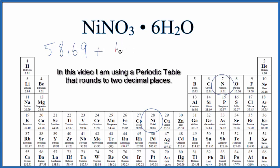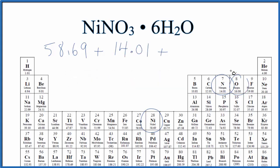Nitrogen, 14.01 grams per mole, and then the oxygen, that's 16.00 grams per mole. We have three oxygen atoms. We're going to multiply that by three, and then we're going to add the water molecules.